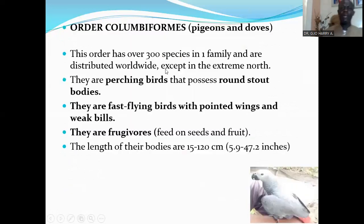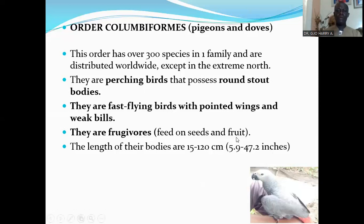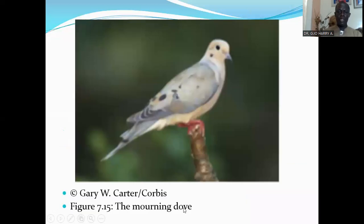The next order is Order Columbiformes, which consists of the pigeons and doves. The order has over 300 species in one family and are distributed worldwide except in the extreme north. They are perching birds that possess round, stout bodies. They are fast-flying birds with pointed wings and bills. They are frugivores, feeding on seeds and fruit. The length of their bodies is 15 to 120 centimeters, that's 5.9 to 47.2 inches. Here is the mourning dove, a typical example of organisms in this order.